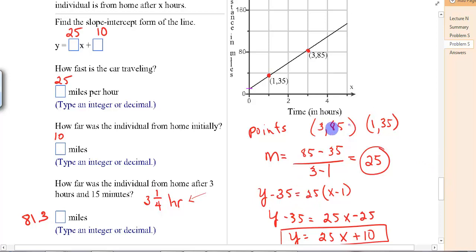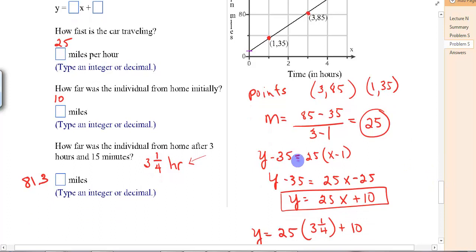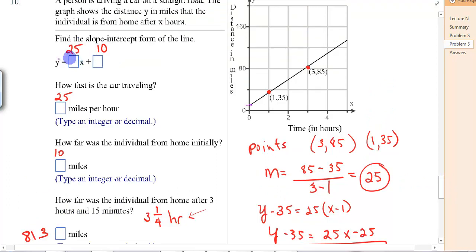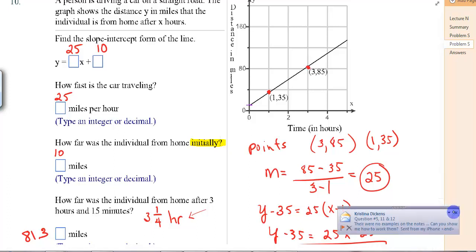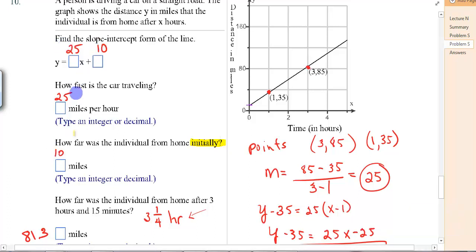Now we'll pick a point and put it in the slope, point-slope form. You could use either one. I always like to use something that has one in it. That's easy to play with. So we're going to put y minus 35 equals 25 times x minus 1. Add your 35 to the other side and you get 25 x plus 10. So that is going in these boxes here, get the 25 and the 10. So it's saying, how fast is the car traveling? What are the miles per hour? That's your slope. That would be 25. How far was the individual from home initially? Remember that y-intercept is about initially. That's where you start. And so that would be the 10. So you get both that from that problem.